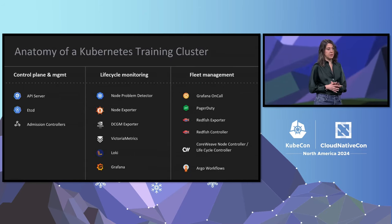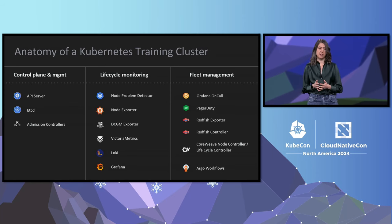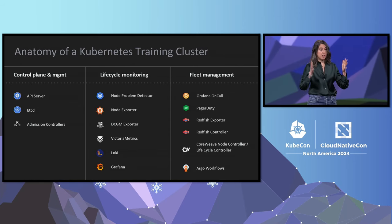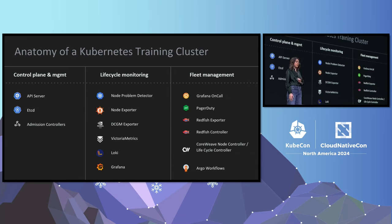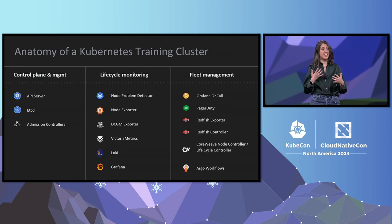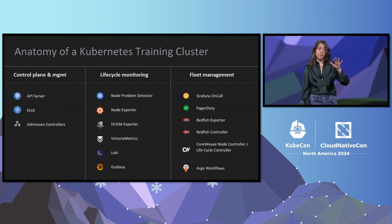Let's take a step back and look at the anatomy of a training cluster. Starting from the left, we have the control plane and cluster management side — this is where we manage the API server and the consistency of etcd. Then we look at the container lifecycle and the health of it. And finally, an area we take a lot of pride in is fleet management. Being able to properly manage the state and health of physical hardware and Kubernetes nodes is a key investment area for us. We leverage Kubernetes common patterns like operators, take advantage of many cloud-native technologies, and optimize the entire stack for AI workloads — from InfiniBand through bare metal up to the orchestration layer.